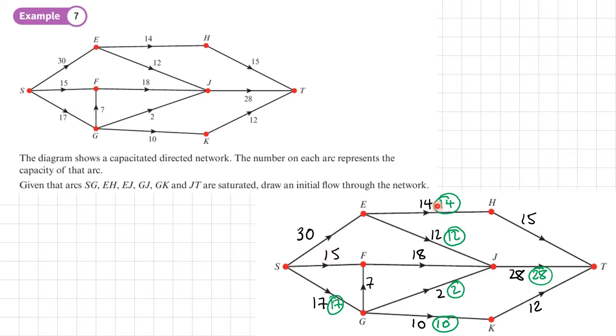Capacities are shown in black. The saturated networks, which is basically the flows, are shown in green. And now I can complete this diagram because I know that the flow into a vertex is equal to the flow out. So if we start here, for example, I've got a flow out of 26, which means that the flow in must also be 26.